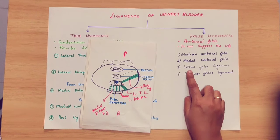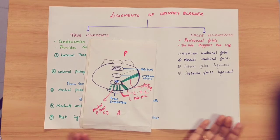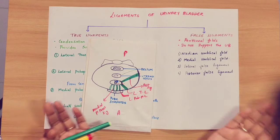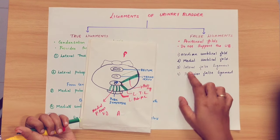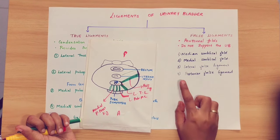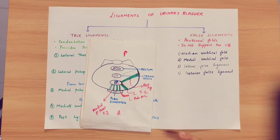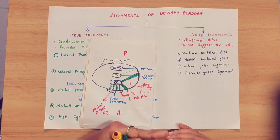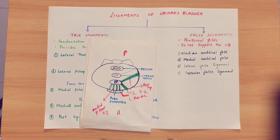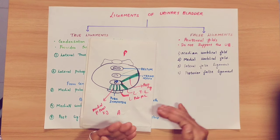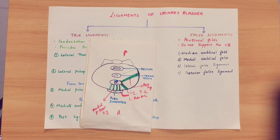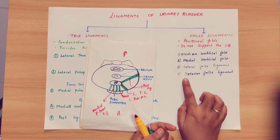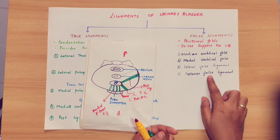The second false ligament is the lateral false ligament, on the lateral side of the pelvic bone. The third false ligament is the posterior false ligament. In the urinary bladder, at the third sacral bone, there is a double fold of the peritoneum — that is why we call it the posterior false ligament.